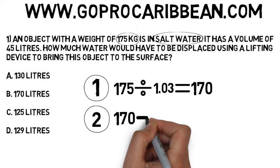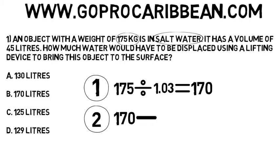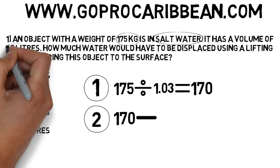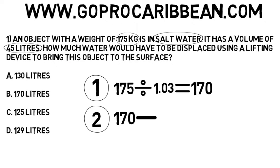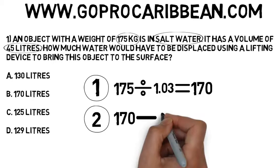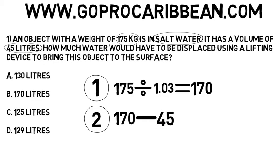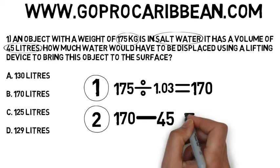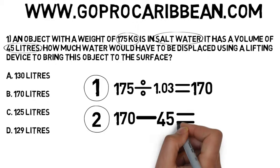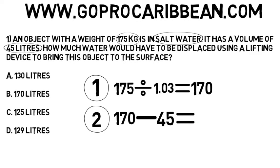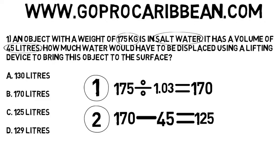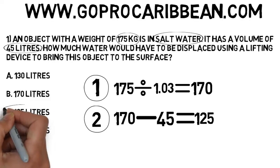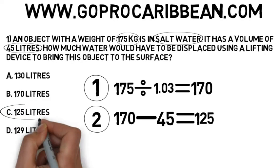Then we need to subtract the amount of water it already displaces based on its volume. Its volume is 45 litres, so we enter that in. The balance is what we need to use a lift bag to displace to make it neutrally buoyant. So 125 litres is the correct answer — Answer C.